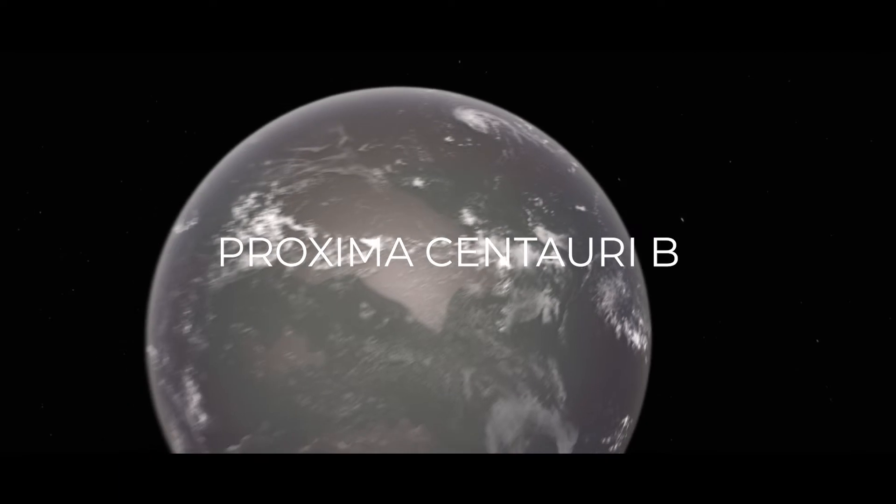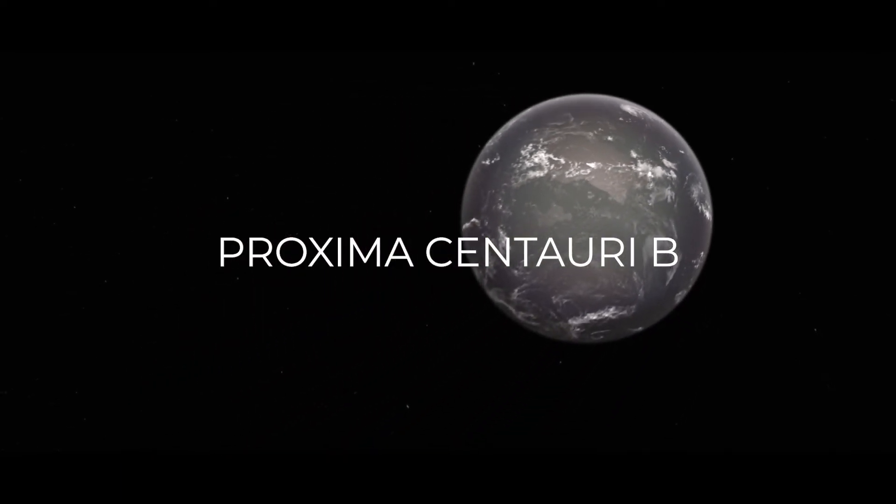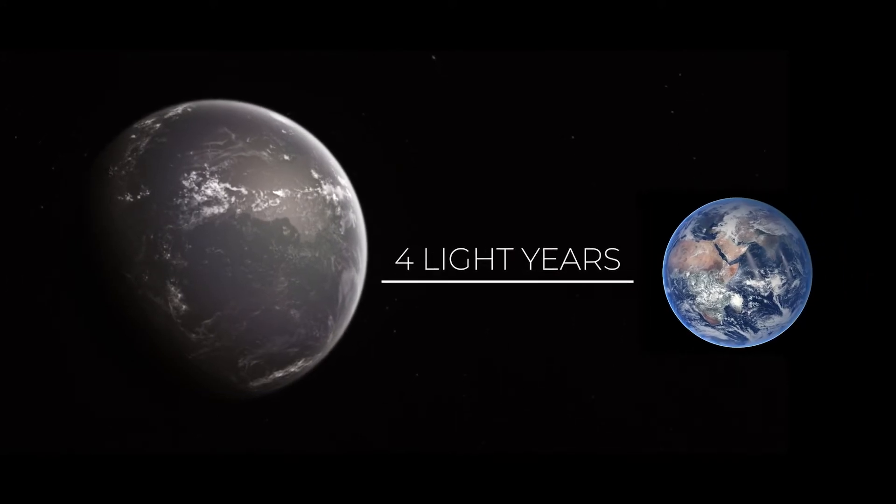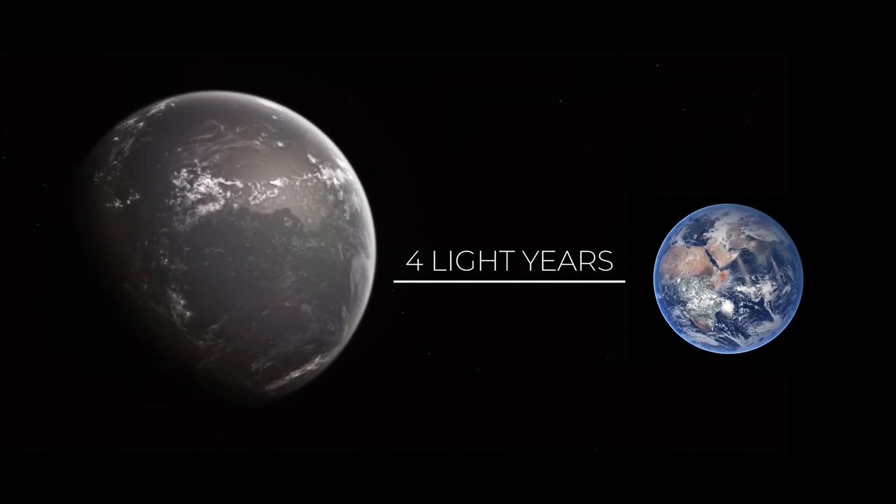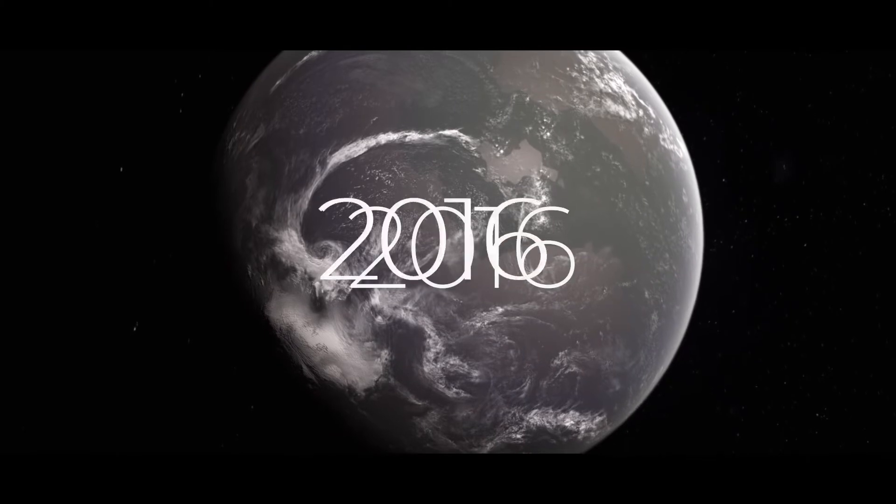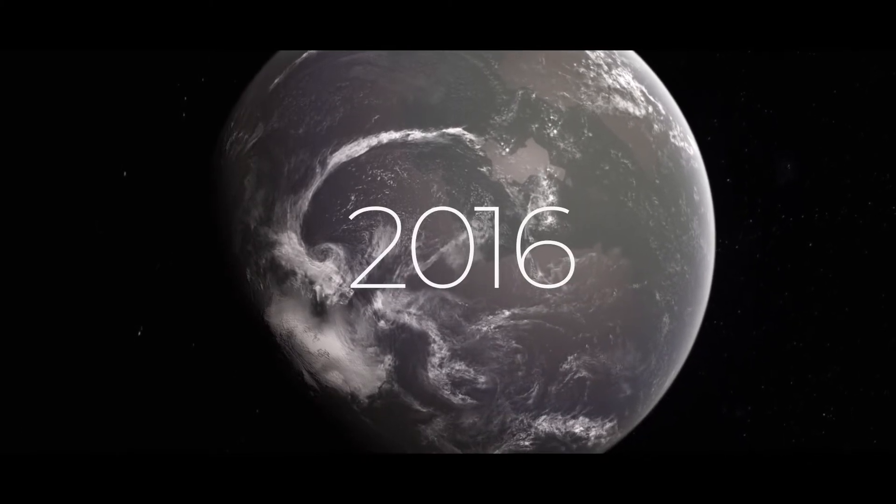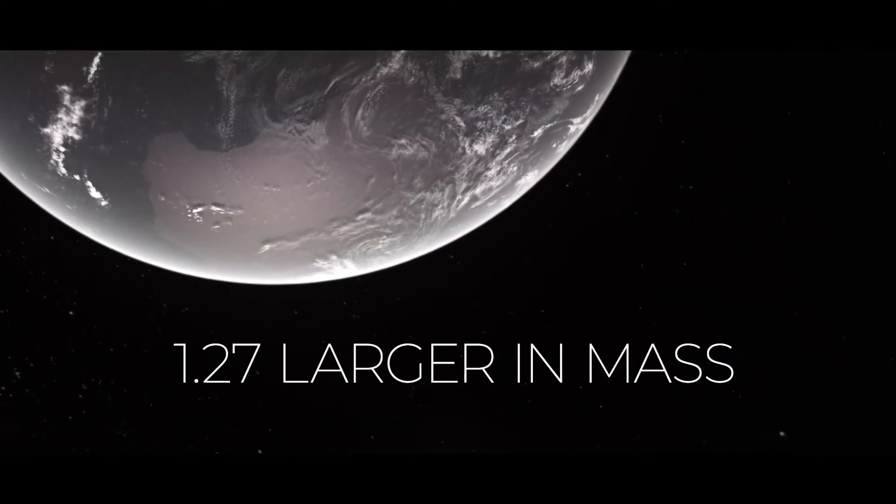Number 5: Proxima Centauri b. According to NASA, this planet is located just four light-years away from Earth, making it Earth's closest known exoplanet. The planet was discovered in 2016 and has a mass of 1.27 times that of Earth.